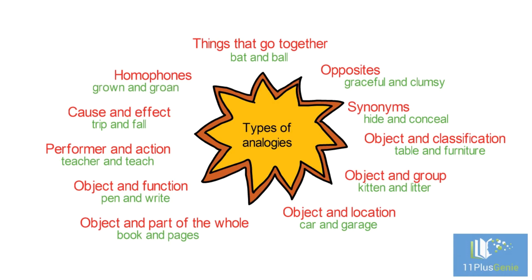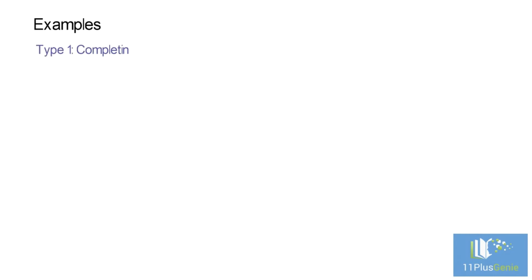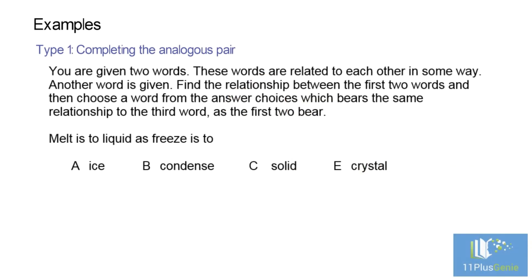Let's look at the two different types of analogy questions that can be asked. Type 1: Completing the analogous pair. You are given two words that are related to each other in some way, and another word is given. Find the relationship between the first two words and choose a word from the answer choices which bears the same relationship to the third word. Melt is to liquid as freeze is to...